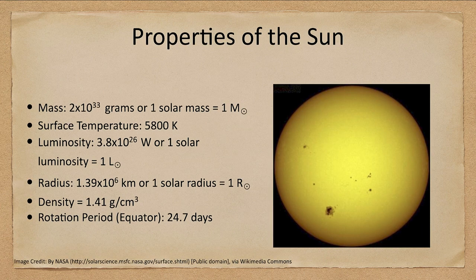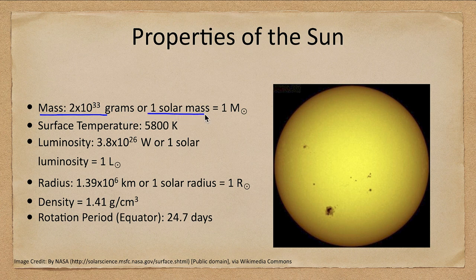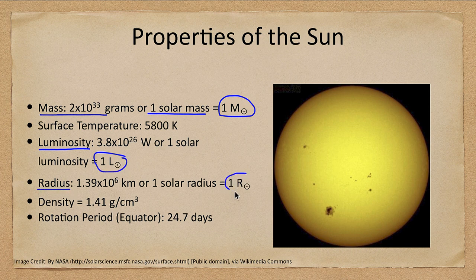What do we know about the Sun? Well, we have its mass — a tremendous mass of 2 times 10 to the 33rd grams, that's a 2 followed by 33 zeros. Because it's such a large number, we tend to write these things for the Sun and for other stars relative to the Sun. So we call this mass 1 solar mass. We do the same thing for the luminosity — the luminosity of the Sun is 1 solar luminosity, and the radius of the Sun is 1 solar radius.